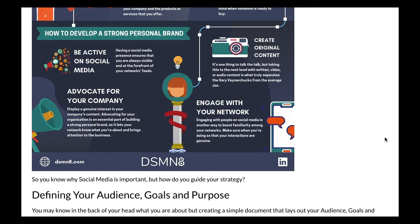Next, how to develop a strong personal brand. Be active on social media — having a presence ensures you are always visible and at the forefront of your network's feeds. Advocate for your company: display a genuine interest in your company's content, as it lets your network know what you're about. Create original content: taking it to the next level with written, video, or audio content is what truly separates the Gary Vaynerchuks from the average joe. Engage with your network to boost familiarity, and make sure your interactions are genuine.